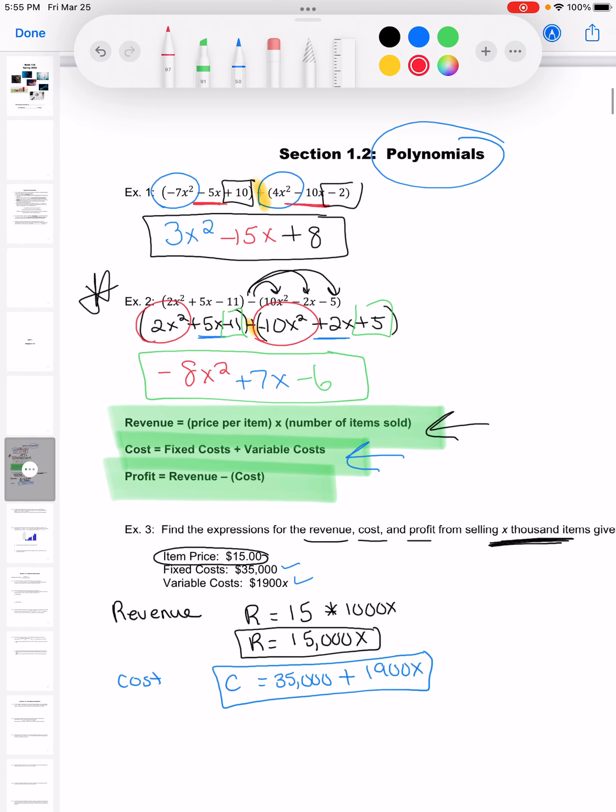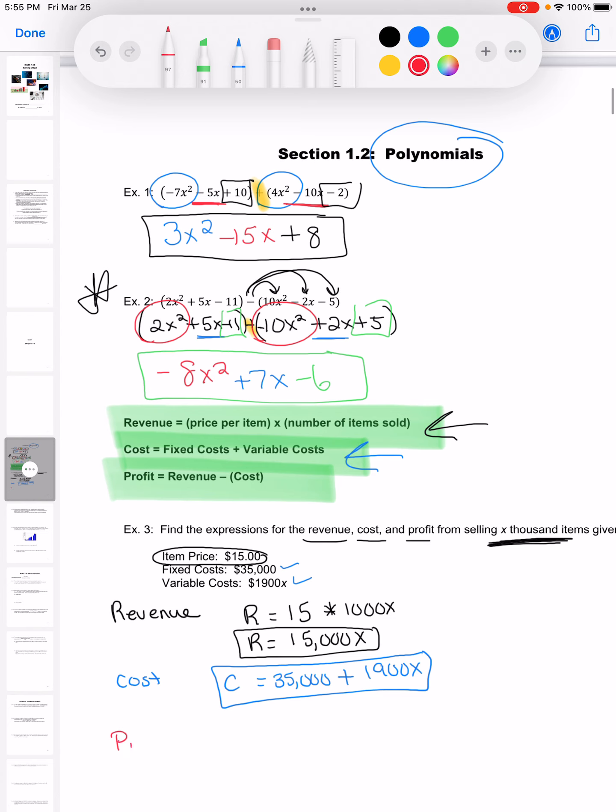And then last, we have the profit. And this is why we needed to do the review we did up above. The profit is the revenue minus the cost. So we're going to do that subtraction. And notice I did put the cost in parentheses. That's important. I put it there for a reason. Don't skip it.